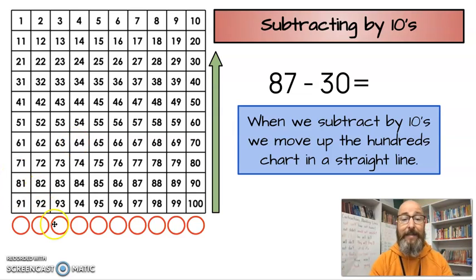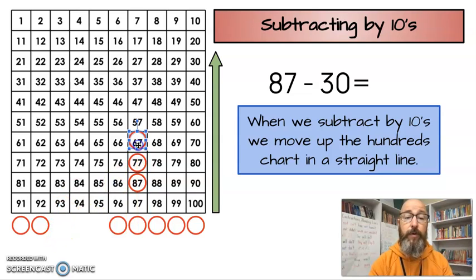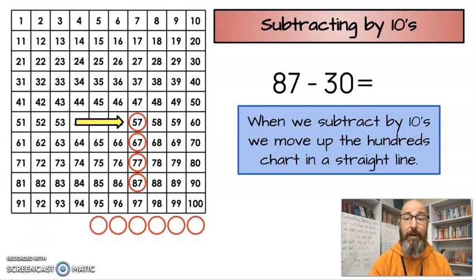So, if I have 87 minus 30, in my head, I'm going to start at 87, and I'm going to do three jumps, because there's three 10s in 30. And I'm going to go 1, 2, 3. And I'm going to land on 57, which means that 87 minus 30 is 57.